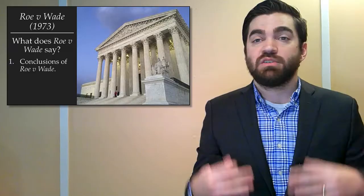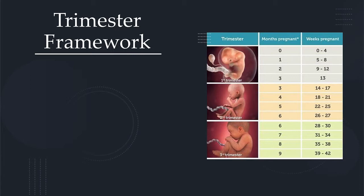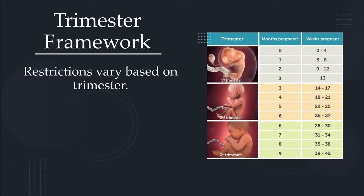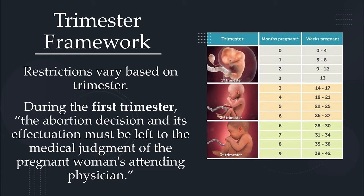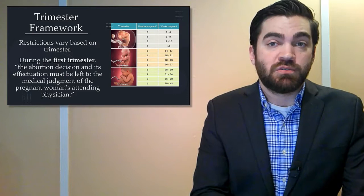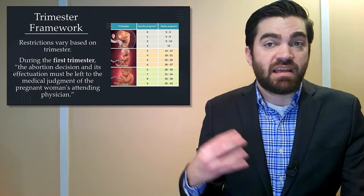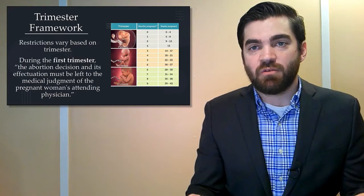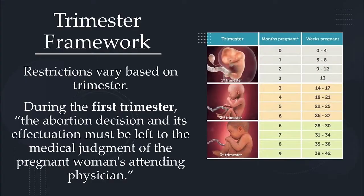So first, what does Roe v. Wade conclude? Pregnancy is divided into three trimesters, and what the government can do in terms of restricting access to abortion will change depending on what trimester a pregnant person is in. During the first trimester, the Supreme Court says the abortion decision and its effectuation must be left to the medical judgment of the pregnant woman's attending physician. The state cannot interfere with access to abortion during the first trimester.